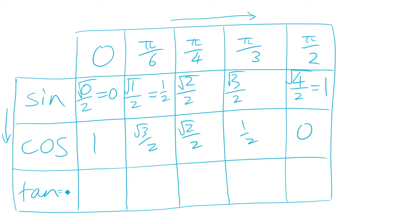And then tan, because tan is equal to sine over cos, we can just take whatever's in the sine row and divide it by whatever's in the cos row. So 0 divided by 1 is 0, and then we can fill all the other tan exact values in using that method.